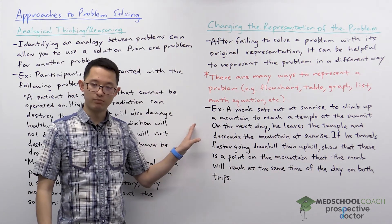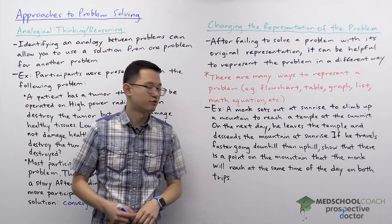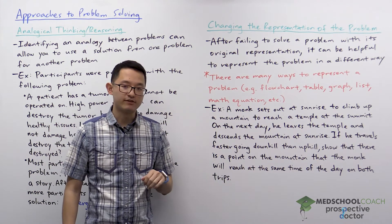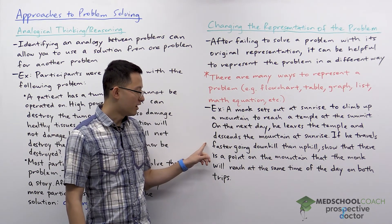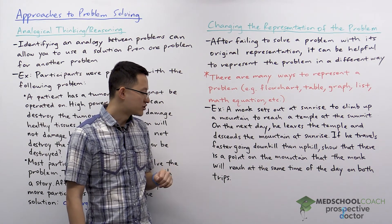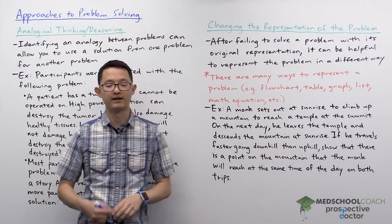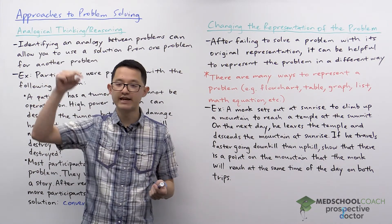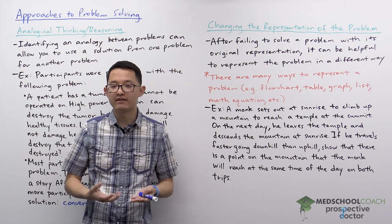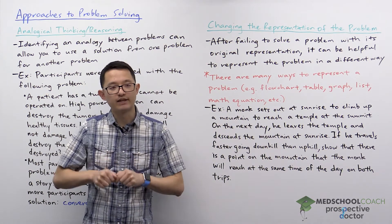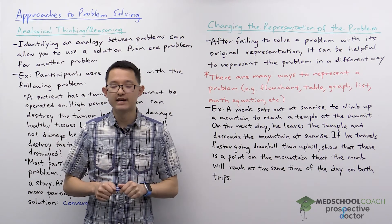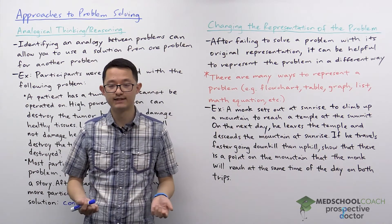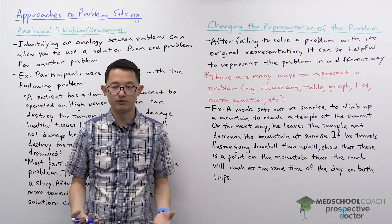In the monk problem, a monk sets out at sunrise to climb up a mountain to reach a temple at the summit. On the next day, he leaves the temple and descends the mountain at sunrise. If he travels faster going downhill than uphill, show that there is a point on the mountain that the monk will reach at the same time of day on both trips. It can be pretty hard to figure this out, especially if you're just representing the problem as text.